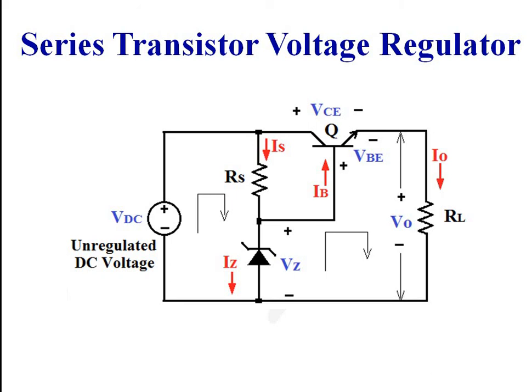This is the diagram of a series transistor voltage regulator. VDC is the unregulated DC voltage, IZ is the current flow through the zener diode, IS is the current flow through resistance RS, IB is the base current of the transistor, I0 is the output current, V0 is the output voltage, VBE is the voltage between base and emitter of the transistor, and VCE is the voltage between collector and emitter of the transistor.